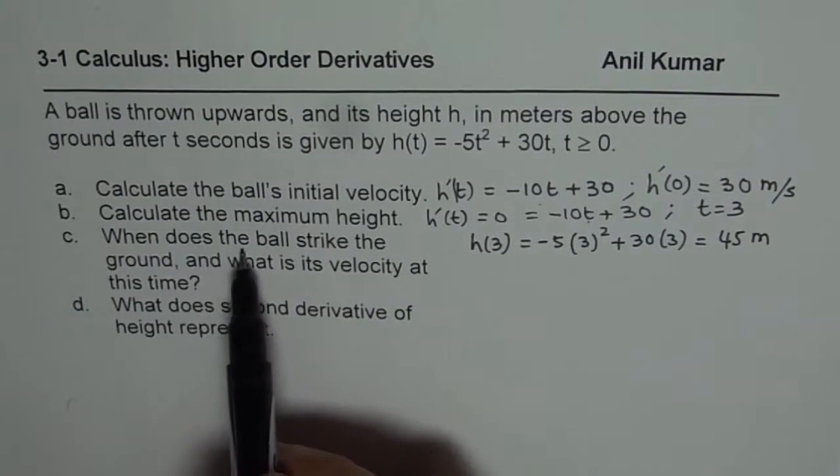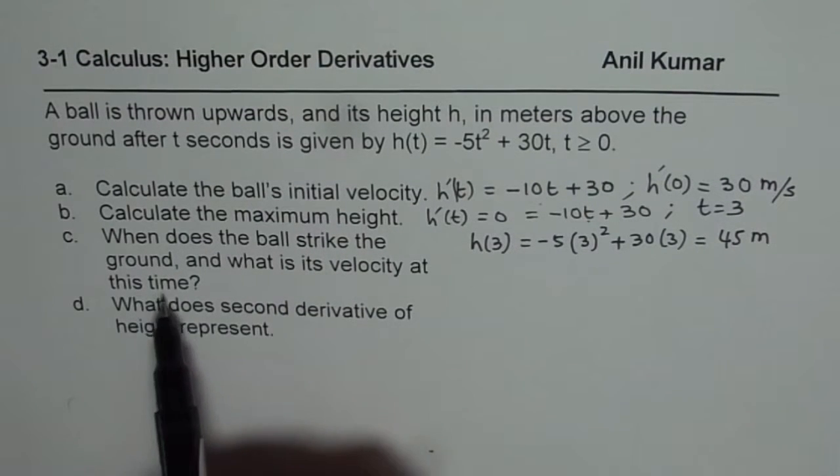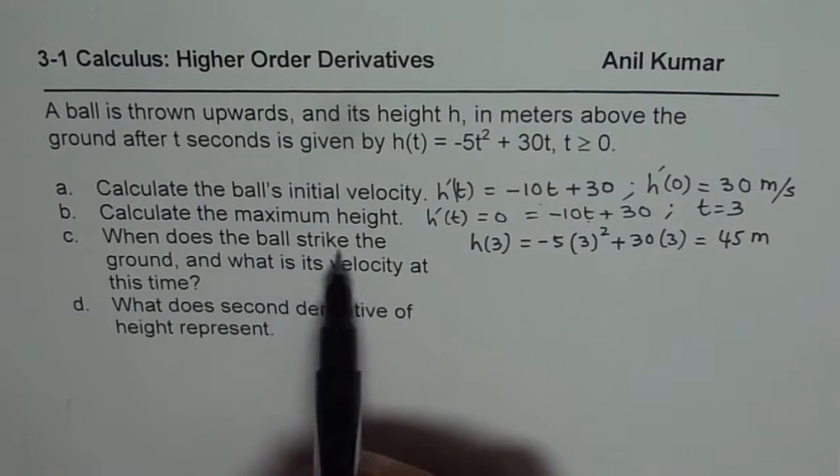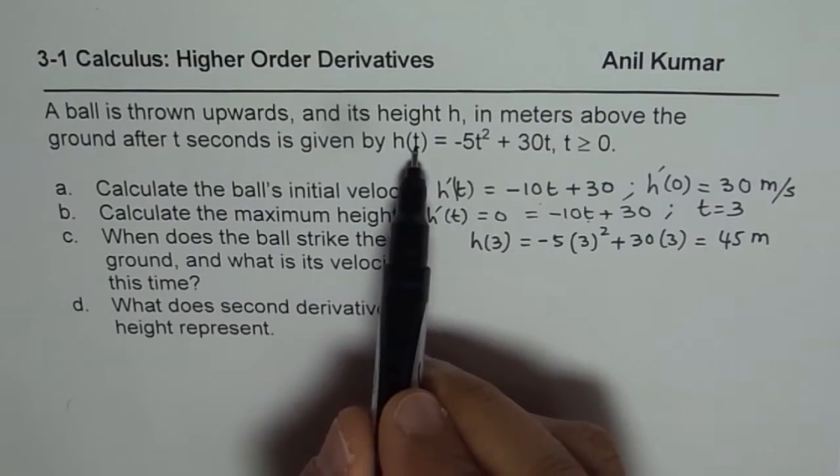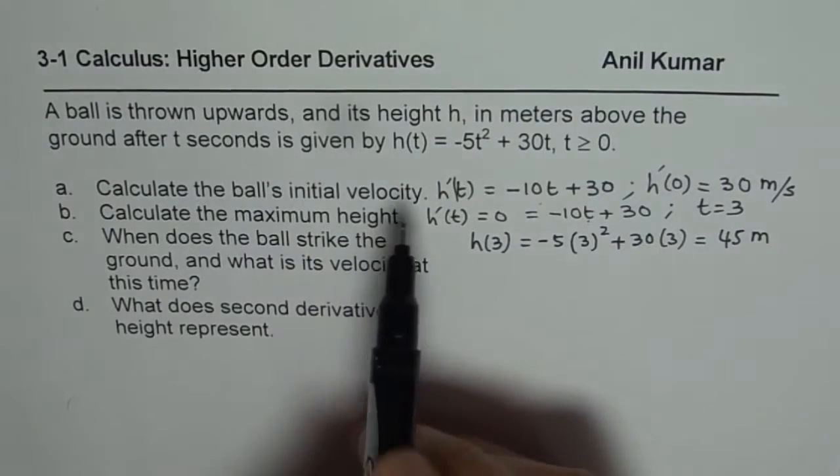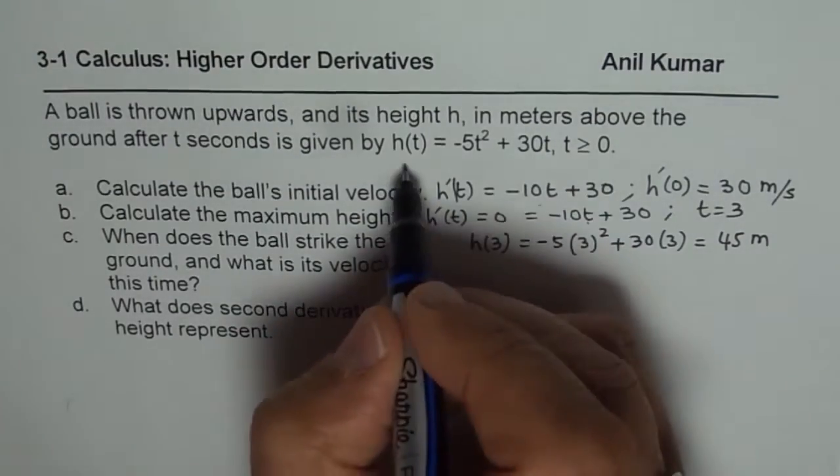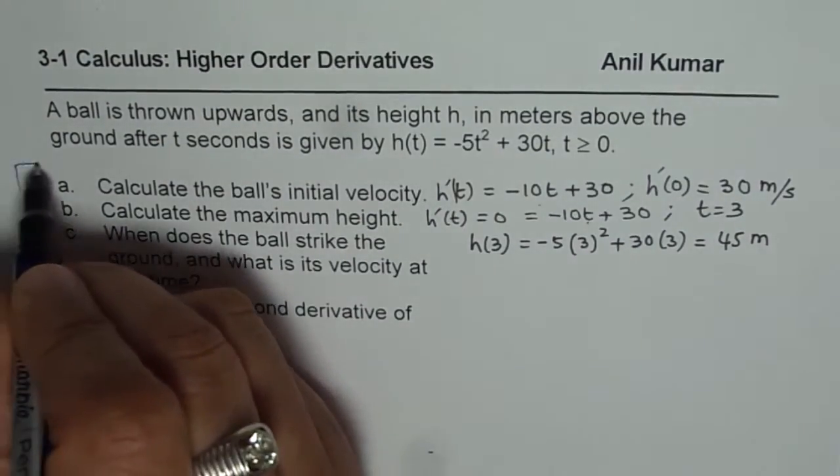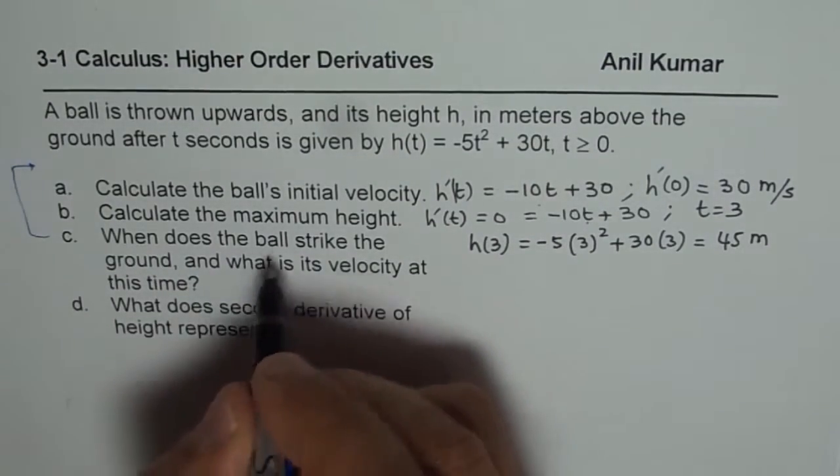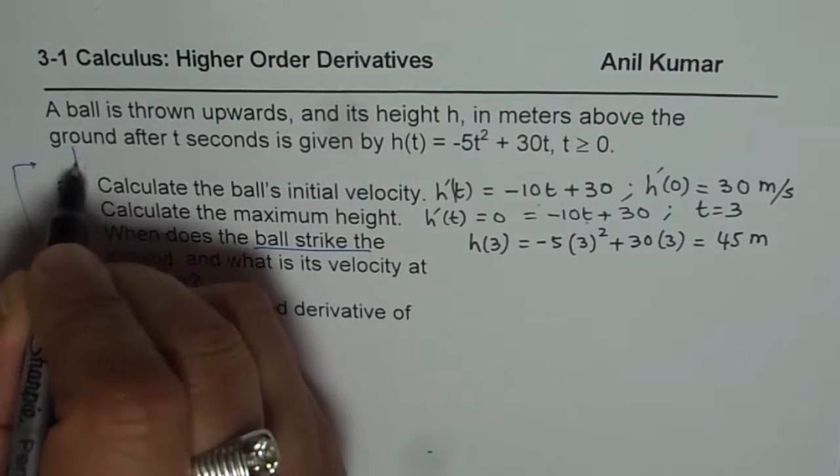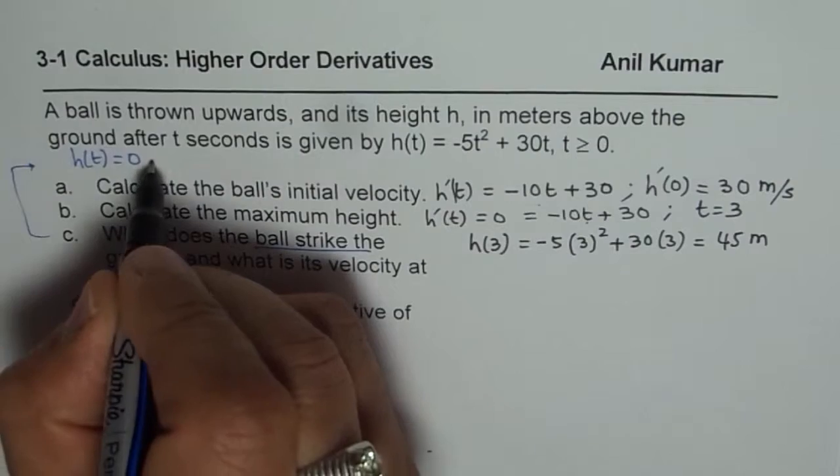When does the ball strike the ground and what is its velocity at this time? So to find when it strikes the ground, height becomes 0. So what we need to find is 0 from the very first equation. So we will calculate for, let me now use a different thing. So we are trying to solve part c. So I am rewriting this equation. So as the ball strikes the ground, it means h(t) = 0.